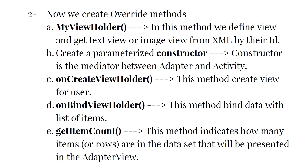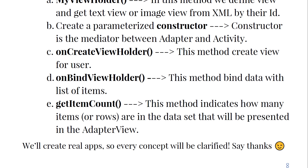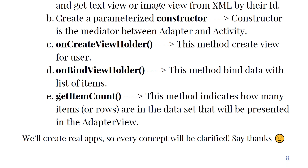How to create an adapter in Android Studio — you need to follow these steps. First, declare two main variables: context and array list. Context is used for access to application-specific resources and classes, as well as calls for application-level operations such as launching activities, broadcasting, and receiving intents. Array lists provide a resizable array, meaning items can be added or removed from the list. Next, we create override methods. The MyViewHolder class is where we define the view and get TextView or ImageView from XML by their IDs. The constructor is the mediator between the adapter and the activity. OnCreateViewHolder creates the view for the user. OnBindViewHolder binds the data with the list of items. GetItemCount indicates how many items or rows are in the data set presented in the adapter view.